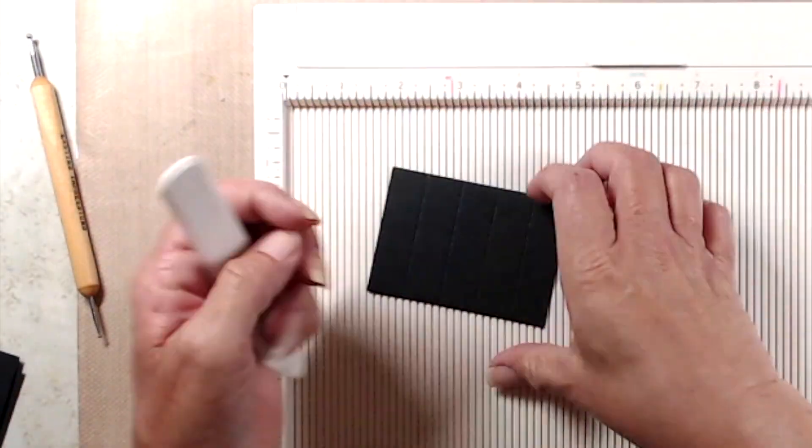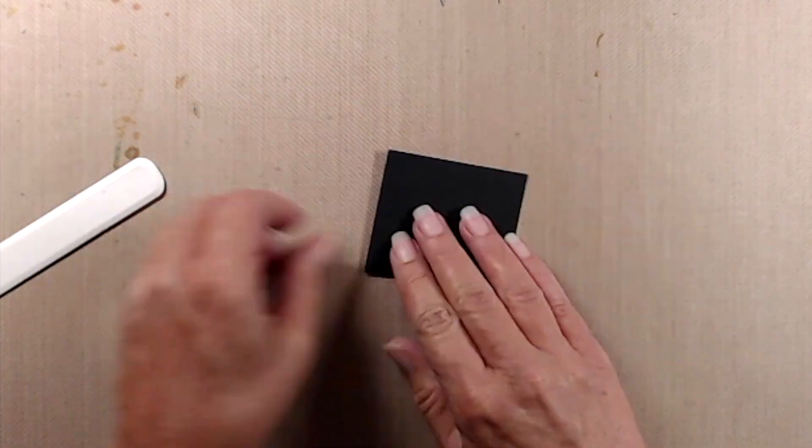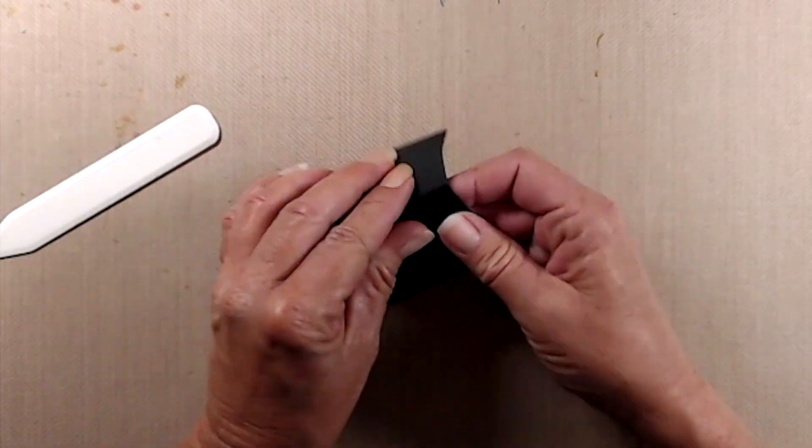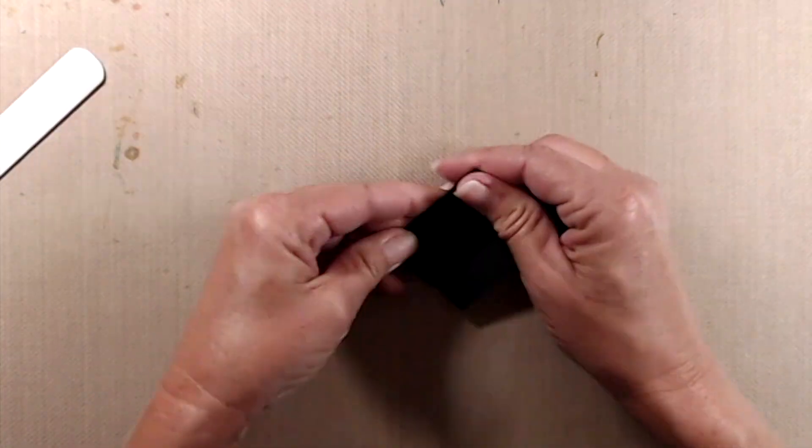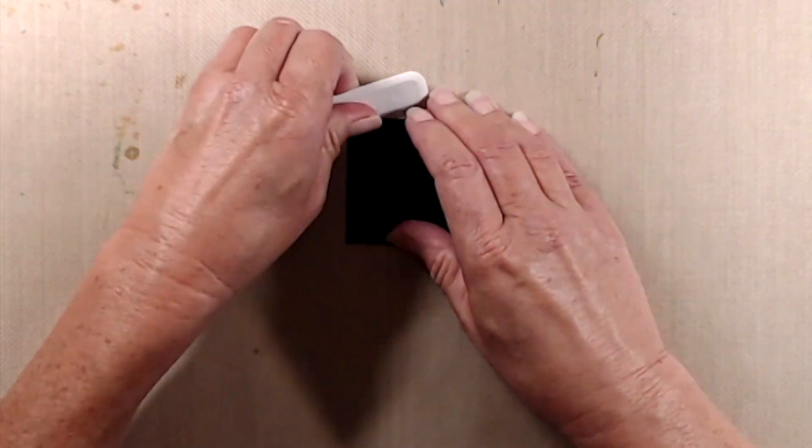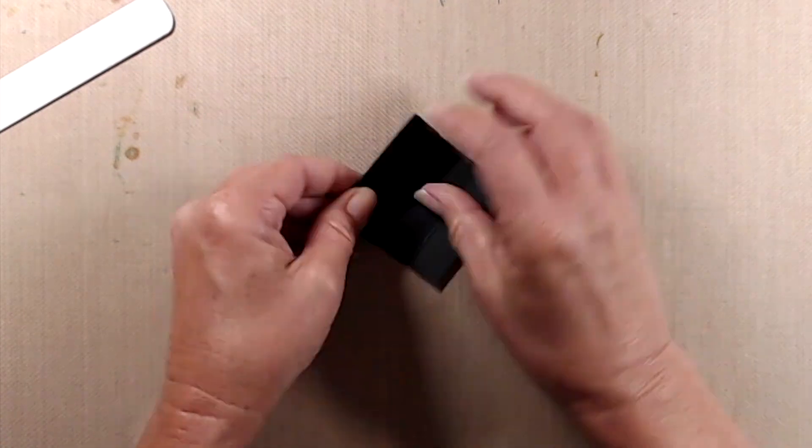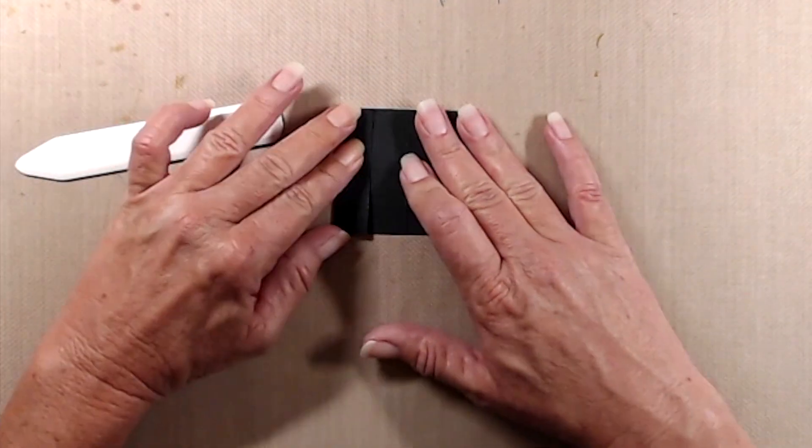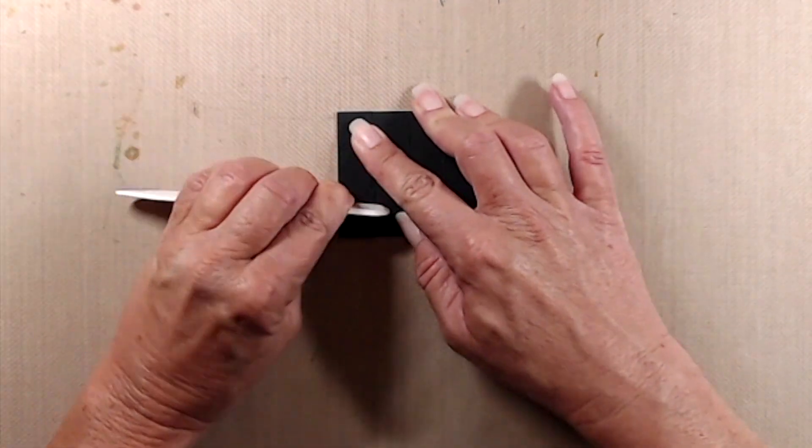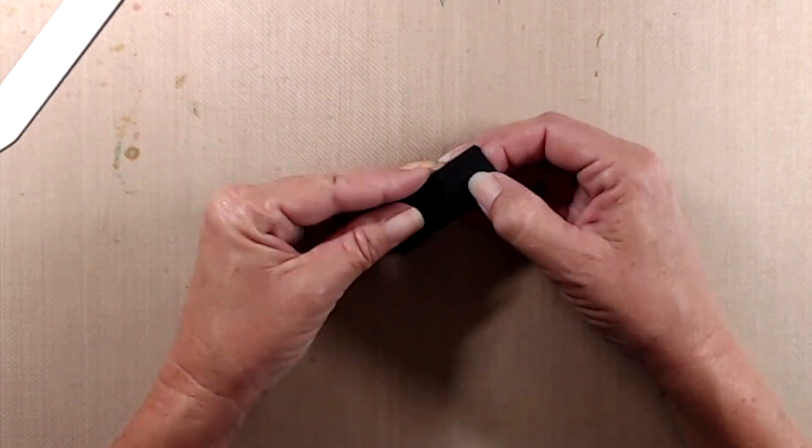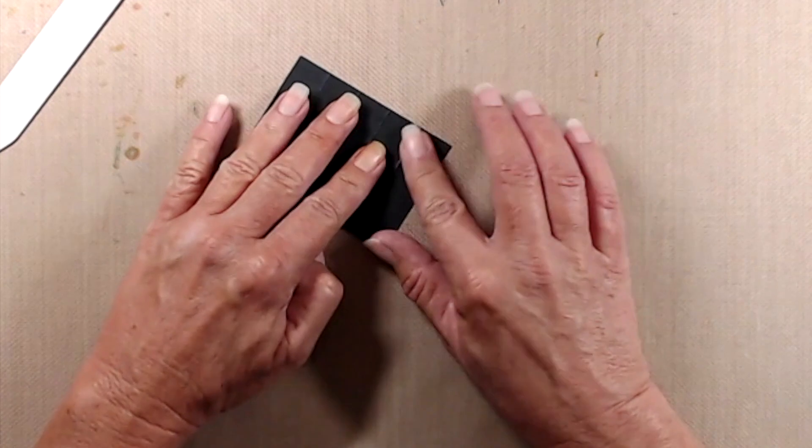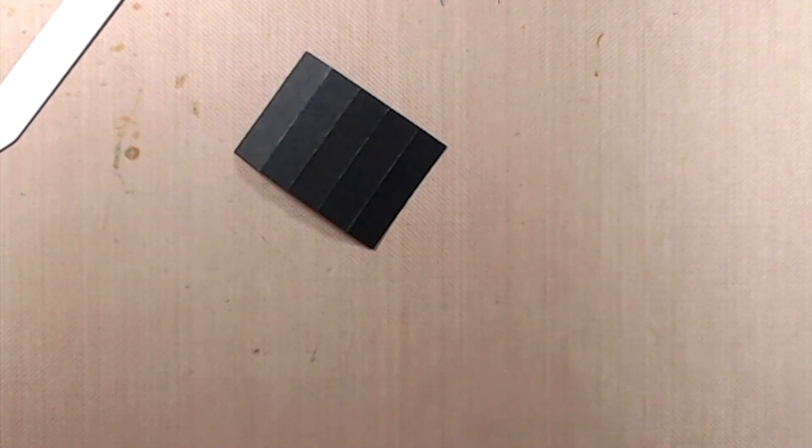These pieces are actually going to go inside the treat box just to hold the test tubes kind of apart from each other and also add a little bit of stability so that they don't flop around too much. After the scoring is done, you want to burnish those score lines really very well. Then you're going to fold it over to make an open-ended box. Then you want to apply adhesive on one of the flaps and put it together so it's a square shape.